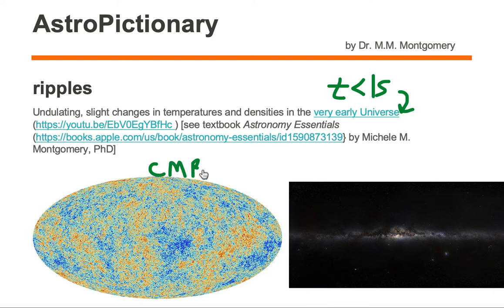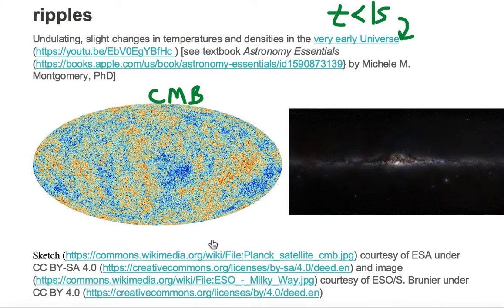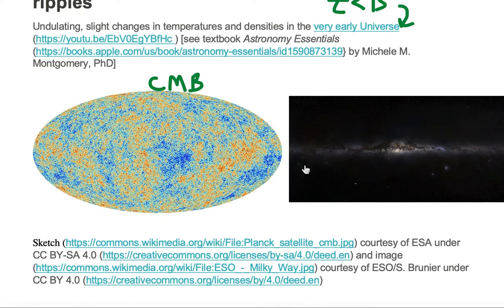The image on the left is the cosmic microwave background. The image on the right is the Milky Way galaxy running left to right in the image.